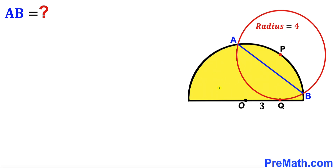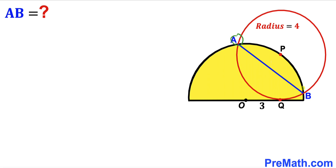Welcome to pre-math. In this video we have a yellow semicircle and a red circle put together as shown in the diagram, such that the center of the yellow semicircle is O and the center of the red circle is P. The red circle is tangent to a line at point Q, and the circles intersect each other at two points A and B. Segment OQ is 3 units and the radius of the red circle is 4 units.